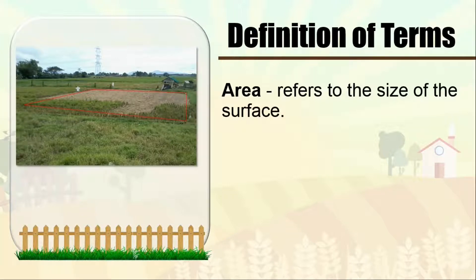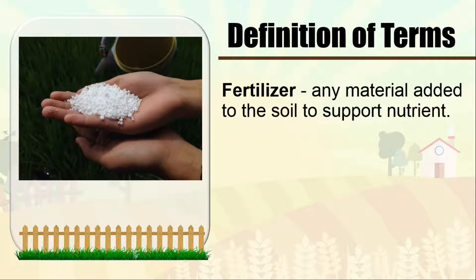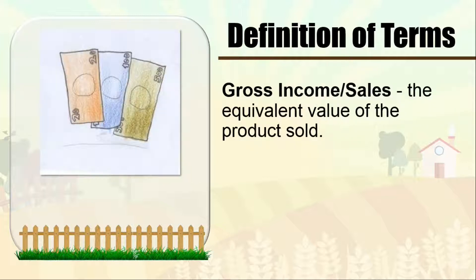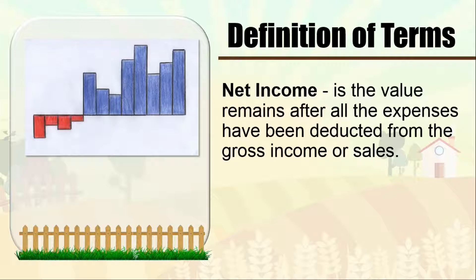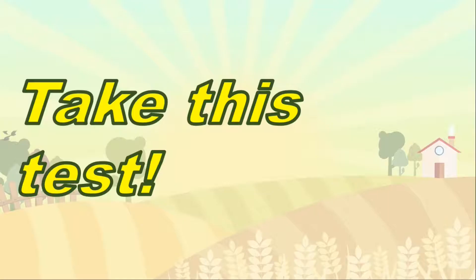Before we proceed, let's have this definition of terms. First, we have area — it refers to the size of the surface. Fertilizer is any material added to the soil to support nutrient growth. Gross income or sales is the equivalent value of the product sold. Interest is the corresponding value that will be added to the principal as payment for using the money of the lender. And net income is the value that remains after all expenses have been deducted from the gross income or sales.